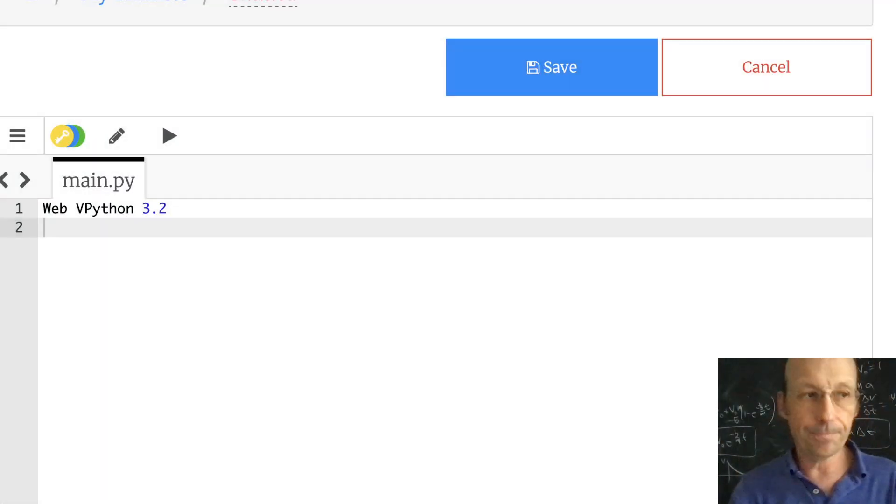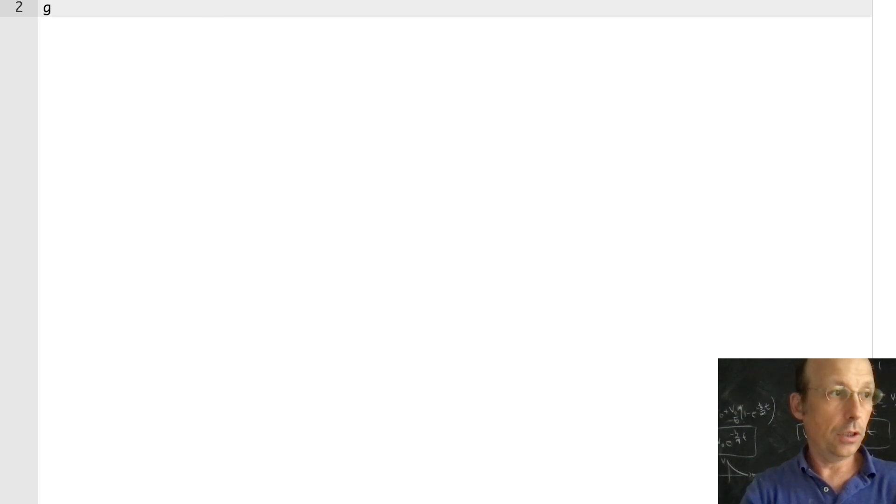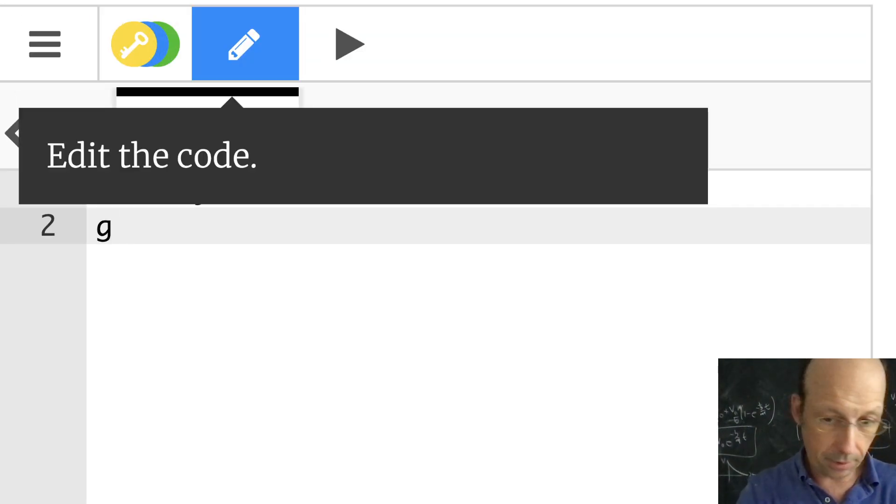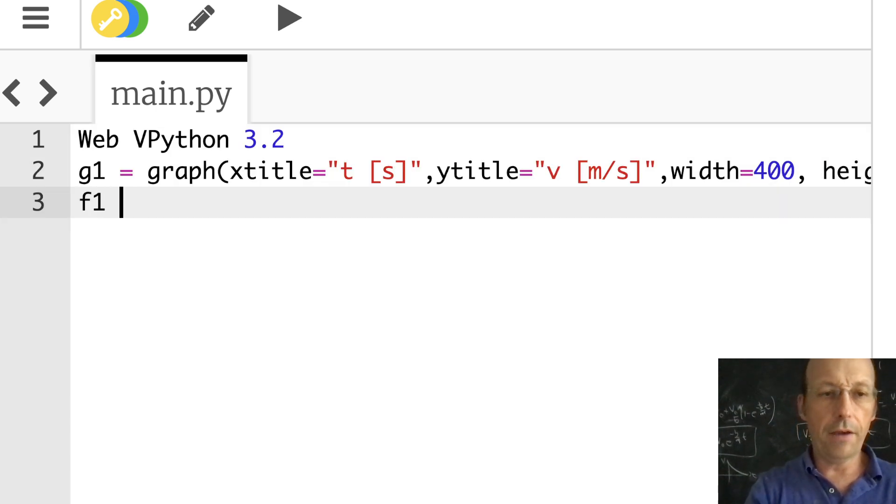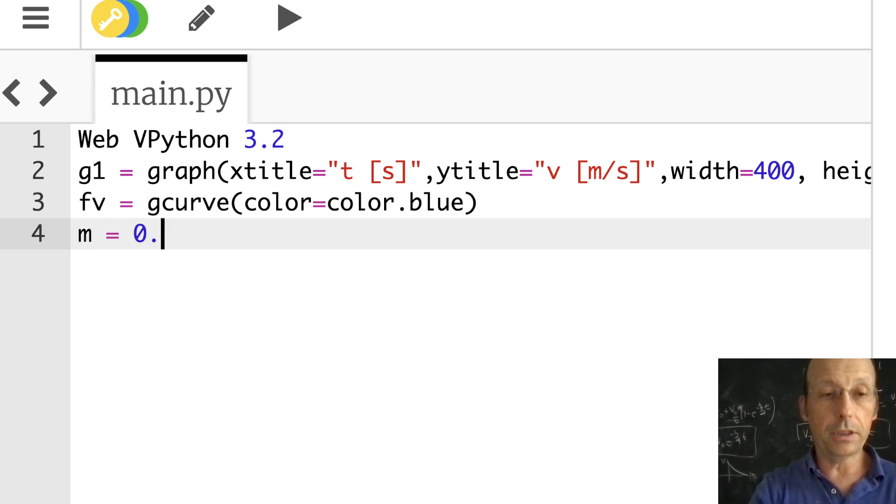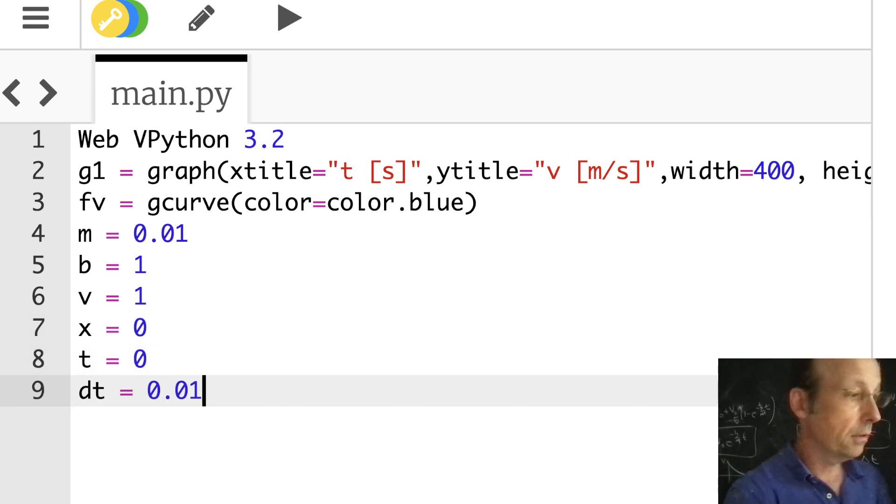Switching over to Python. Let's make a graph. g1 equals graph, xTitle equals time, yTitle equals velocity, width equals 400, height 200. fv equals gcurve, color equals color.blue. Now I need my constants: m was 0.01, b was 1, v was 1, x is 0, t is 0, and dt was 0.01.